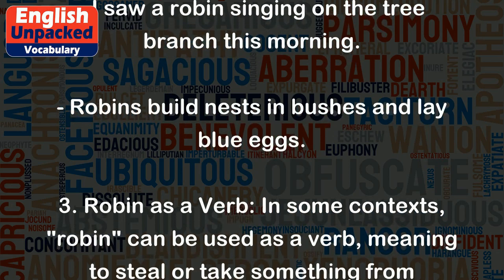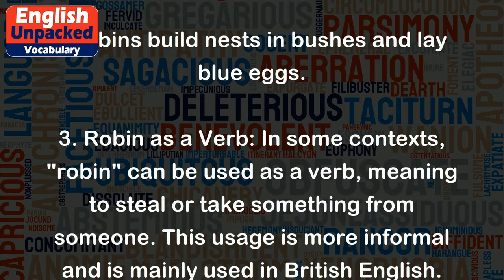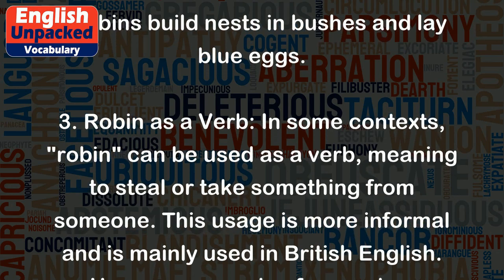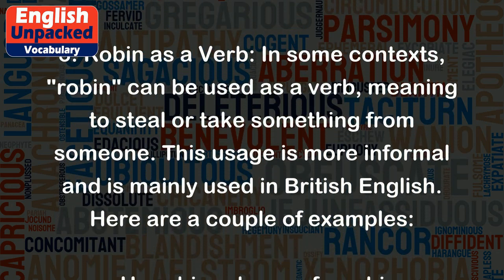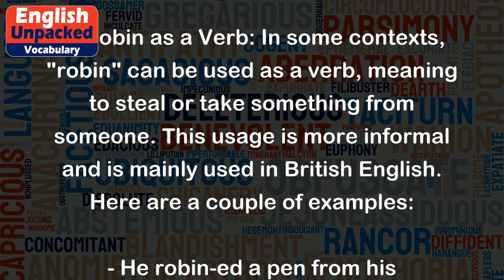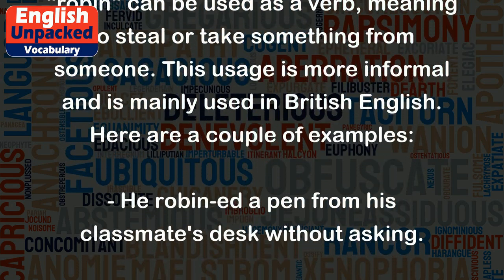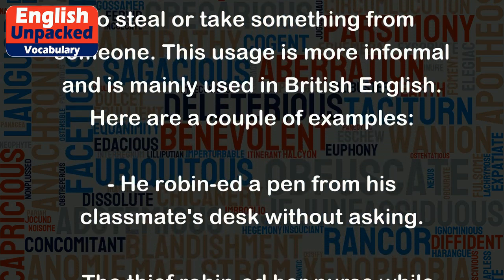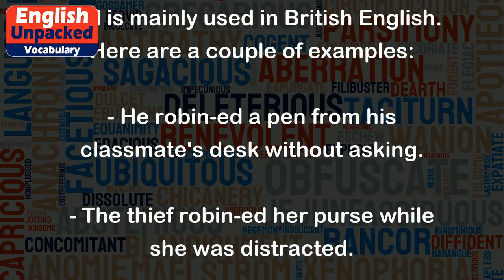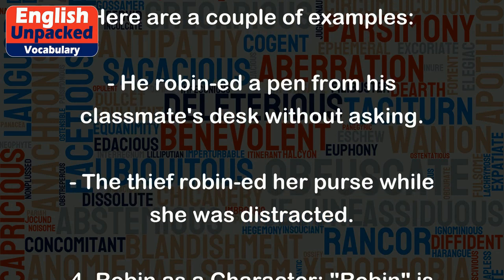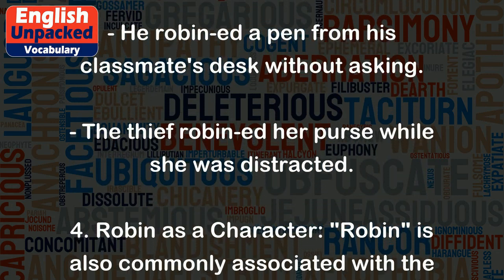3. Robin as a verb. In some contexts, Robin can be used as a verb, meaning to steal or take something from someone. This usage is more informal and is mainly used in British English. For example, he robin-ed a pen from his classmate's desk without asking. The thief robin-ed her purse while she was distracted.